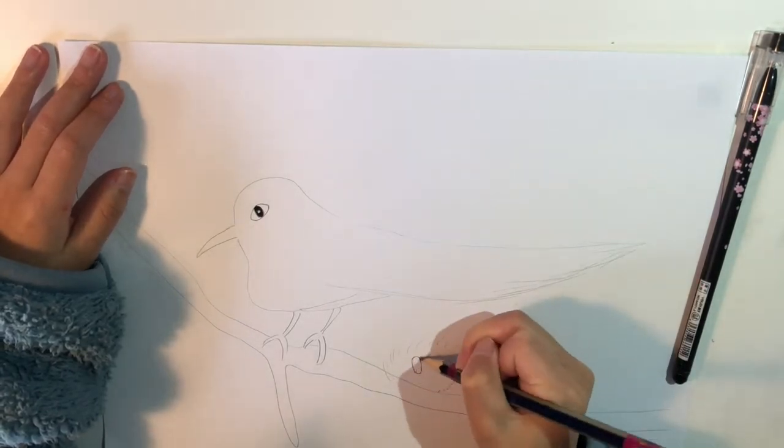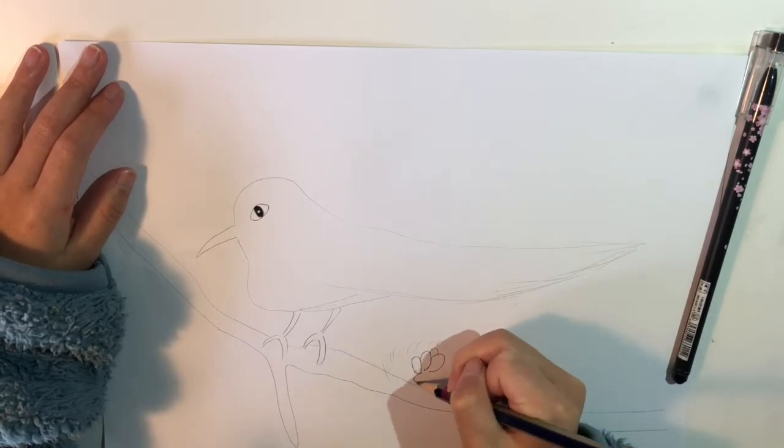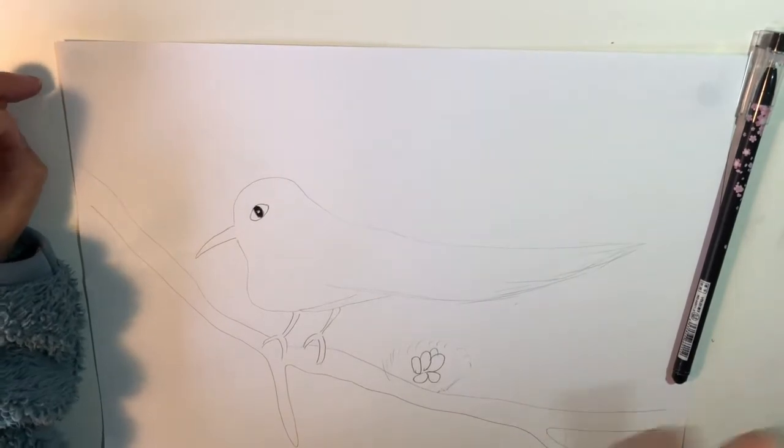And inside, you can draw some eggs like this, and you can add some spots in it when you color it in.